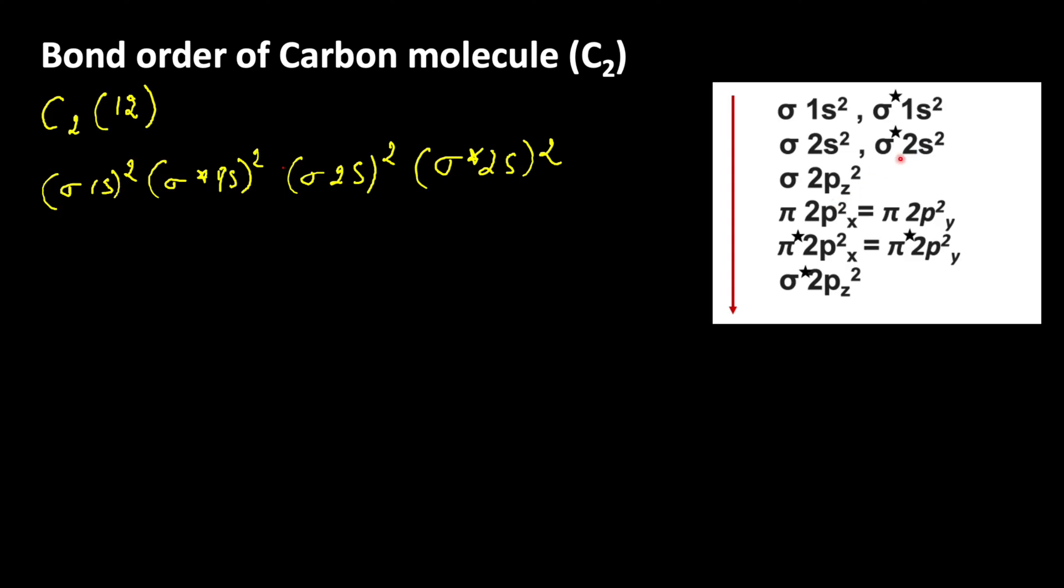This results in increasing energy of 2pz orbital. So, now after filling that sigma star 2s orbital, the electron will enter into pi 2px and pi 2py orbitals because of the highest energy of 2pz orbital.